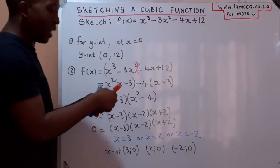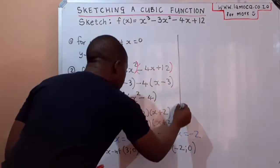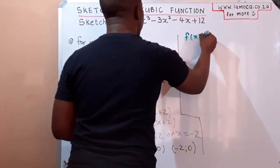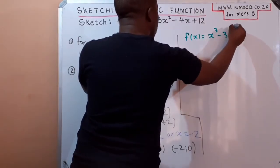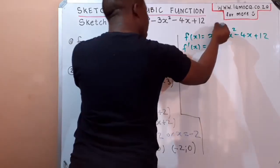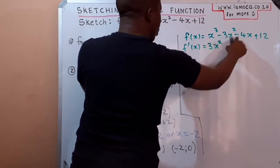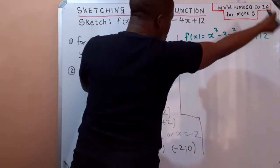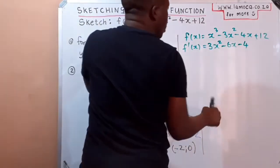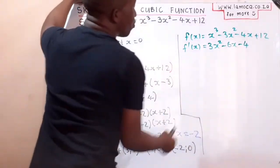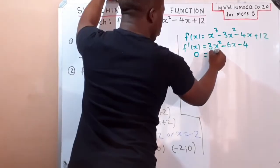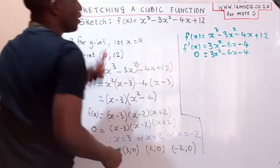For turning points: f(x) = x³ − 3x² − 4x + 12. Finding the first derivative using the power rule gives f'(x) = 3x² − 6x − 4. The derivative of the constant 12 is zero. Since the gradient at a turning point is zero, I set 0 = 3x² − 6x − 4 and now need to solve for x.